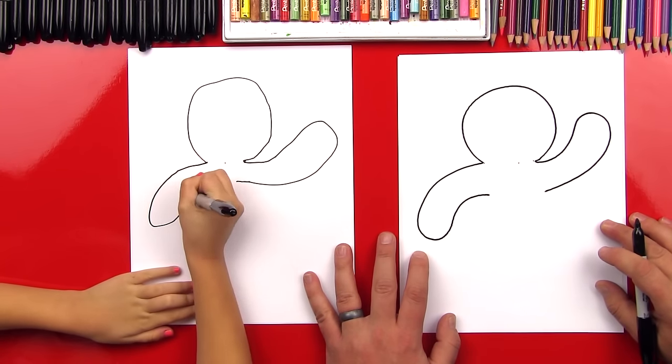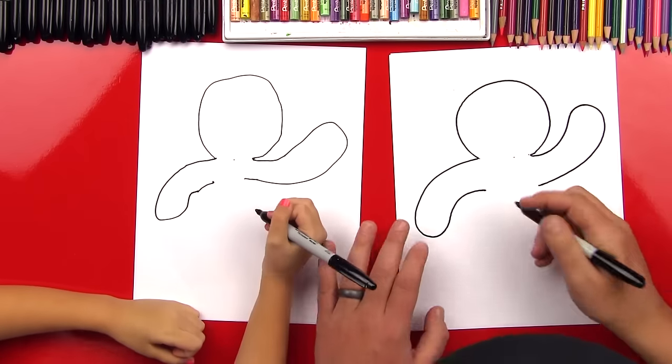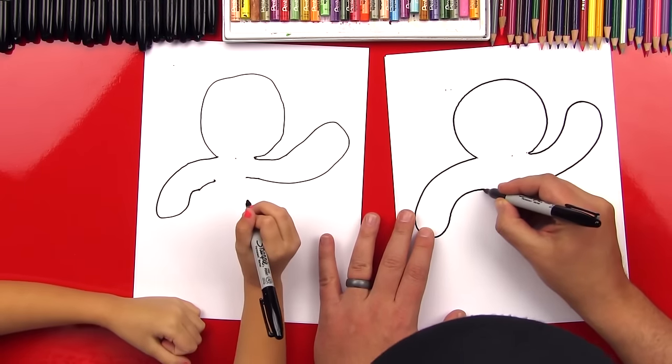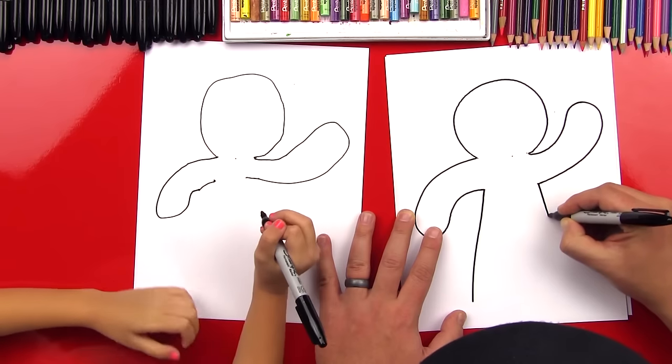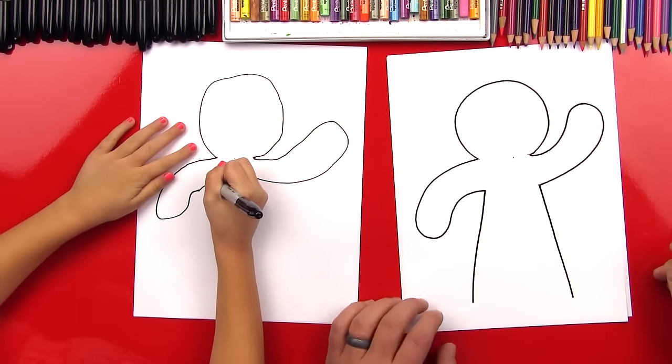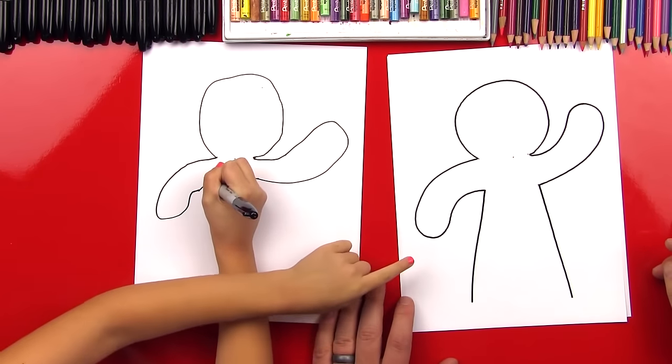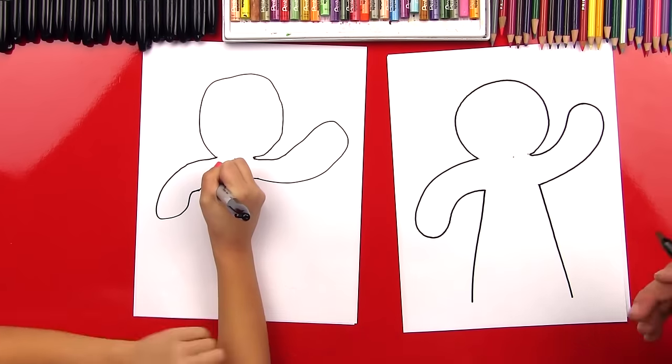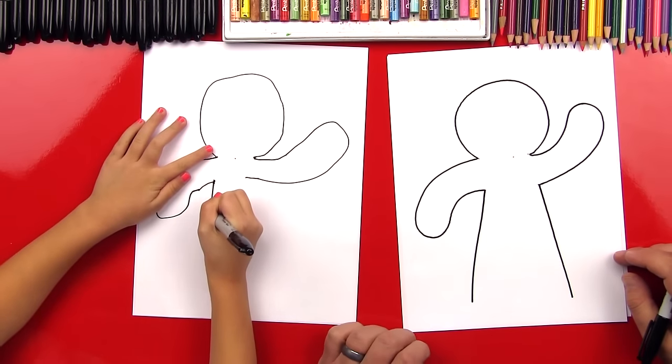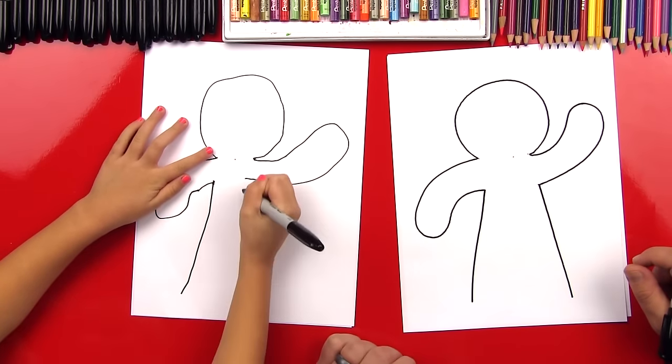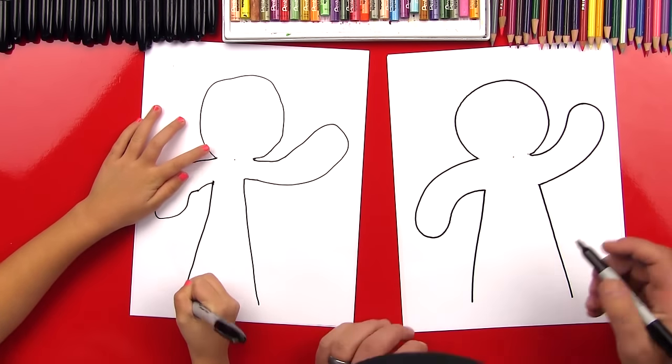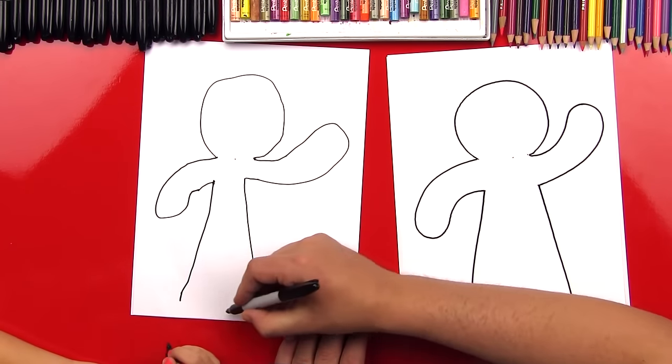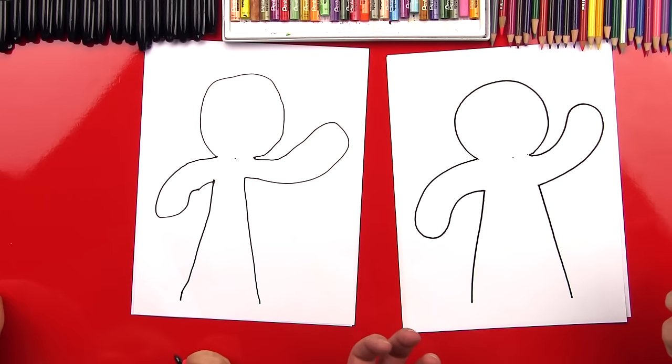Now we're gonna draw his other arm coming down this way, but it's gonna look exactly the same, see that, another hot dog. So we're gonna start right here, come down and then back up to that dot. Yes, oh it's a little one. Alright kid, now let's draw his body so we're gonna come down on both sides, one on this side and then one on this side.